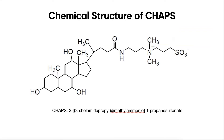This zwitterionic detergent is useful for membrane protein solubilization when it is important to maintain protein activity. CHAPS detergent is soluble over a wide range of pH 2 to 12 and is easily removed from solution because it has a high critical micelle concentration. In contrast, ionic detergents are strong solubilizing agents and tend to denature proteins, thereby destroying protein activity and function.